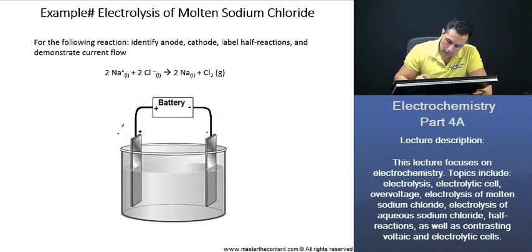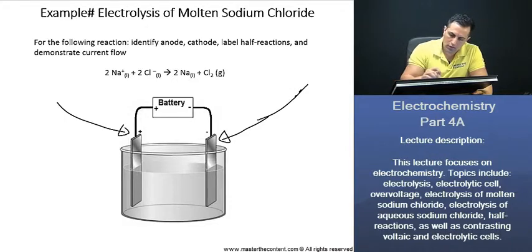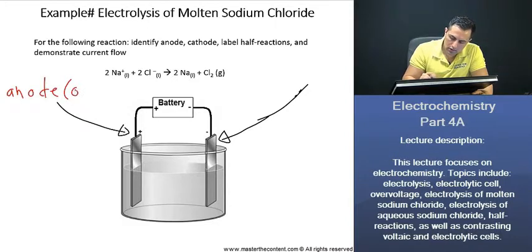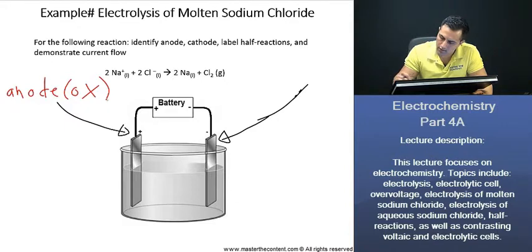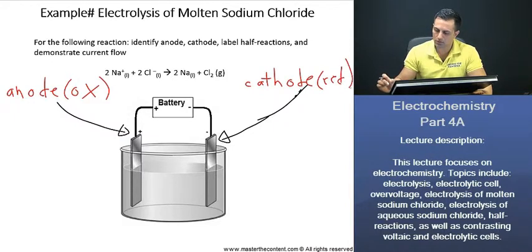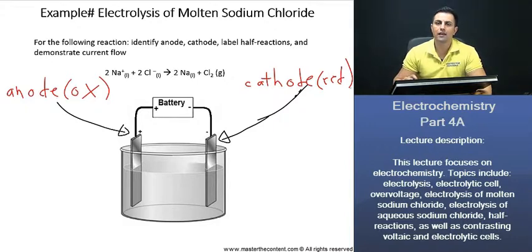Well, for the anode, the anode is going to be the electrode with the positive sign. And that's where oxidation always happens at the anode. And then the cathode is going to be where reduction always takes place. And that's going to be at the negative electrode.